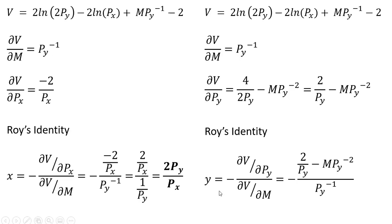Applying Roy's identity to get the Marshallian demand for good y, it's the ratio of these partial derivatives. The only difference from before is in the numerator: now we have the partial derivative of the indirect utility function with respect to the price of good y. Making our substitutions, we move to the next slide to simplify.